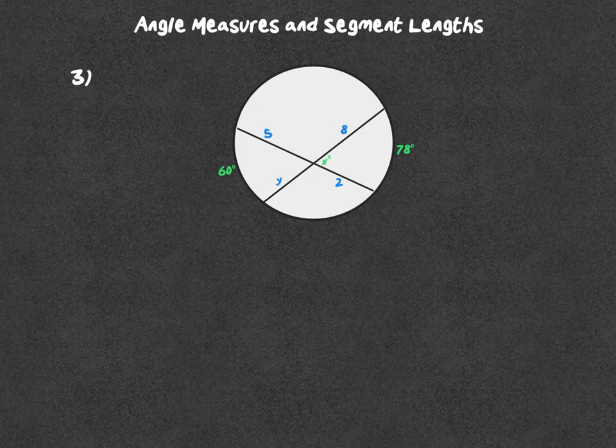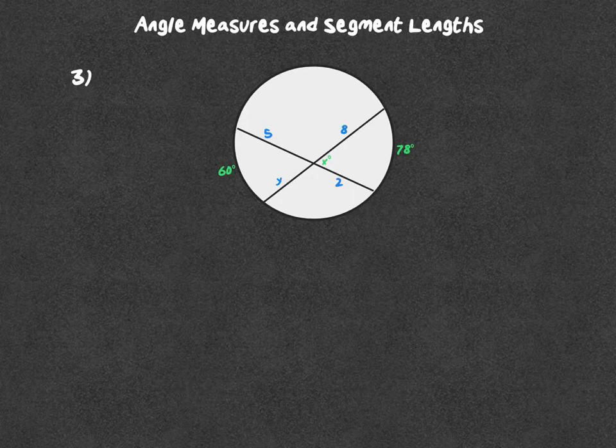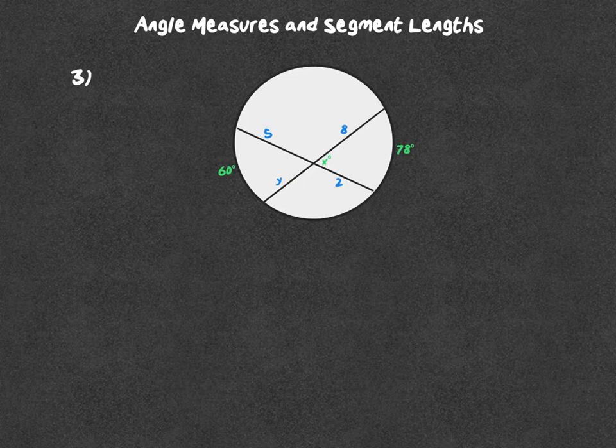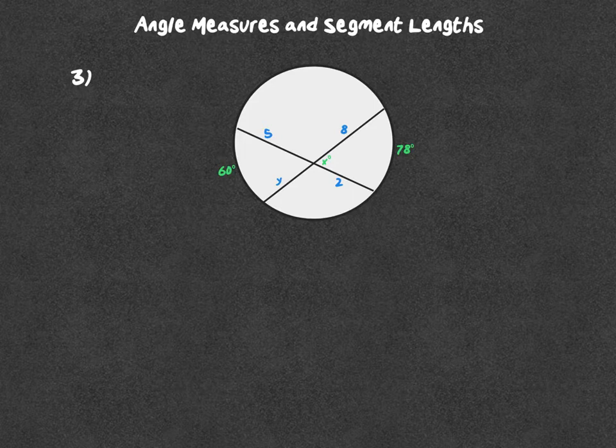Angle measures and segment lengths. In this first problem we have a circle with two chords that intersect inside the circle. To find X we are finding the angle on the inside, so we're going to have the angle equal one half of the sum of the intercepted arcs.